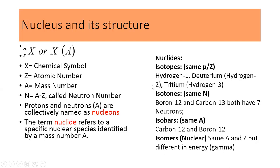Here are the different classifications of nuclides. Isotopes — 'iso' means same, 'topes' means protons — so isotopes are nuclides having the same atomic number (same protons) but different mass numbers and different numbers of neutrons. Examples are hydrogen, deuterium, and tritium: all three isotopes of hydrogen have one proton, but their neutron numbers differ, giving different atomic masses.